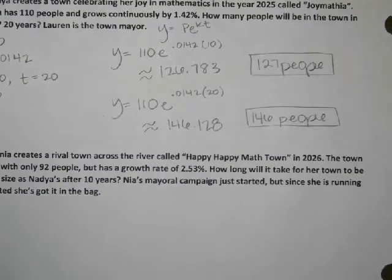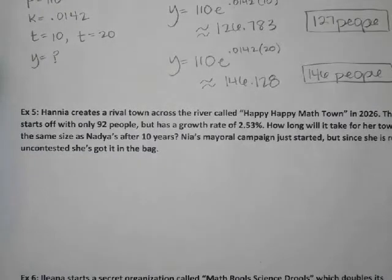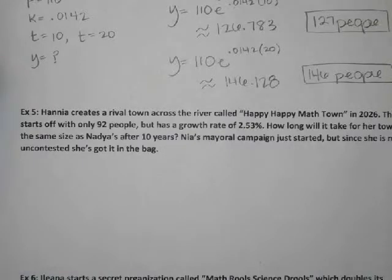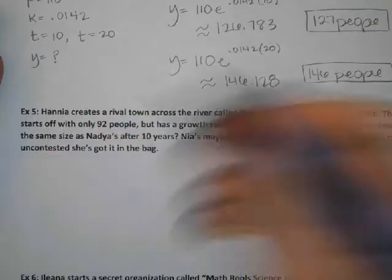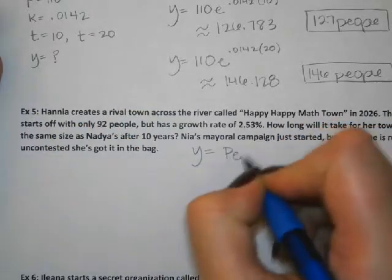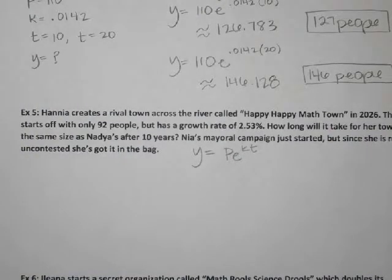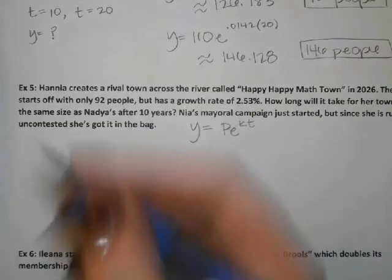Next one. Hania creates a rival town across the river called Happy Happy Math Town in 2026. The town starts off with only 92 people, but has a growth rate of 2.53%. How long will it take for her town to be the same size as Nadia's after 10 years? So we're going to say that the P value, we're going to use the same formula because we are talking, it's compared to example four. So the two examples are being calculated similarly. In theory, I should have written the word continuously in there so that you guys knew for sure to use that formula, but I did not. So we're going to use the same formula.